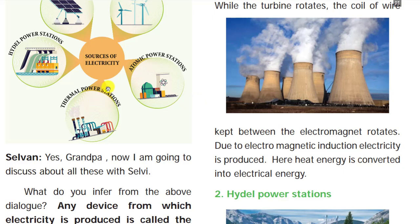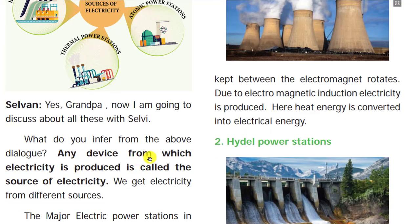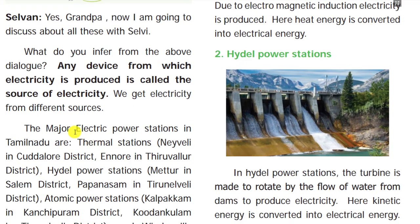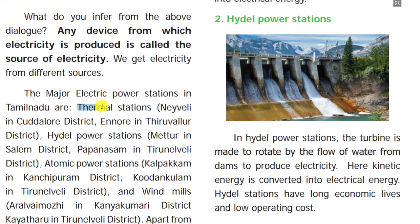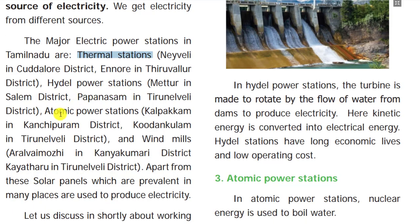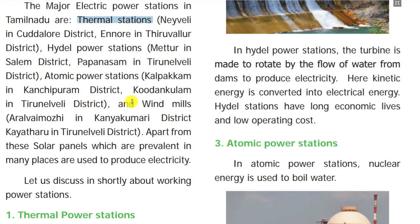Any device which produces electricity is called a source of electricity. There are many sources of electricity. In Tamil Nadu we have: thermal stations at Mettur, Ennore, and Neyveli; hydro power stations at Mettur, Salem, and Papanasam; atomic power stations at Kalpakkam and Kudankulam; and windmills at Aralvaimozhi, Kanyakumari, and Kayathar in Tirunelveli district. Apart from that, solar cells are also used.